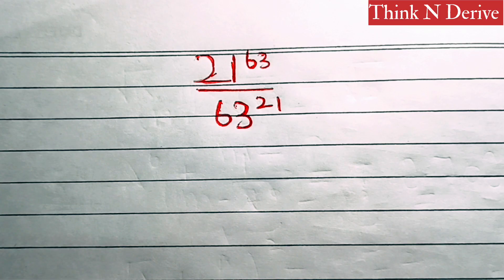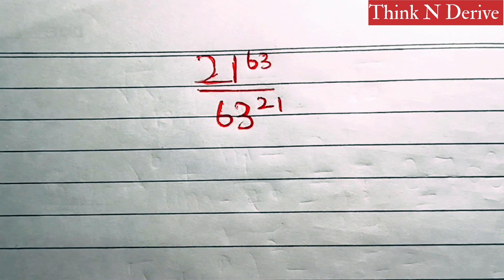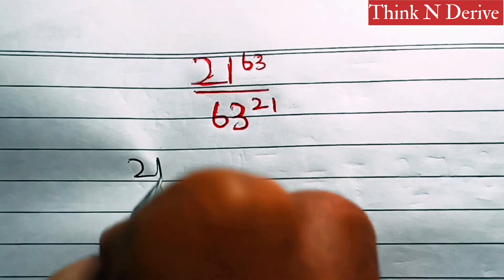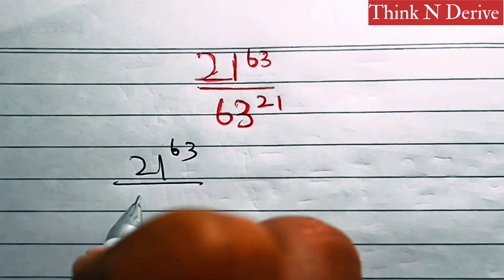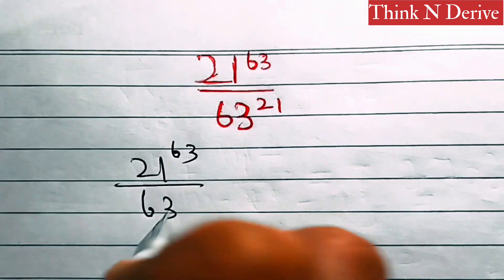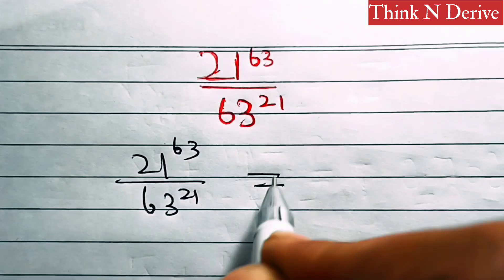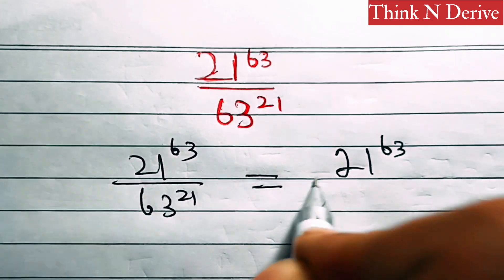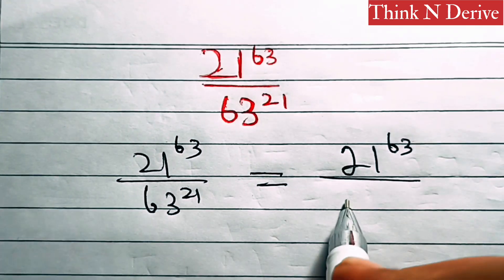Hi everyone! How to simplify 21 power 63 over 63 power 21? So let us try this out. The given problem is 21 power 63 over 63 power 21.